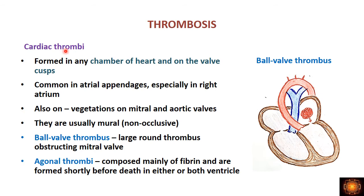Cardiac thrombi are thrombi seen in the chambers of the heart or on valve cusps. Most commonly they occur in the atrial appendages, because in the ventricles and atria the muscle contracts and pushes blood, maintaining flow, whereas in the appendages there is less movement — resulting in stasis leading to thrombus formation, especially in the right atrial appendage. Another common cause is vegetations on the mitral and aortic valves, which inhibit free valve movement and cause turbulence, damaging the endothelium. These thrombi are usually mural, not occlusive.